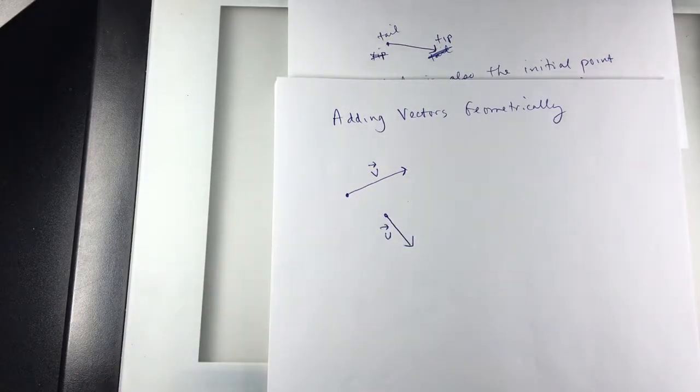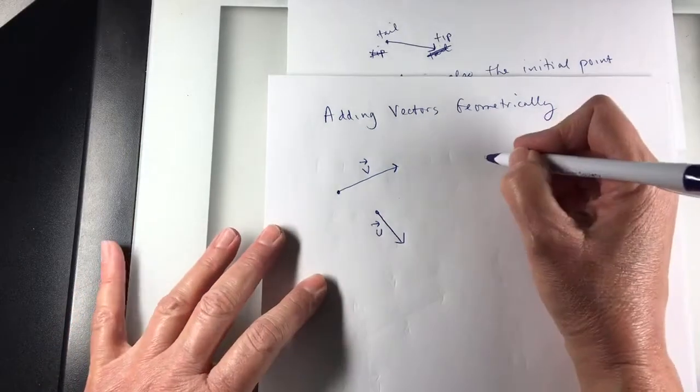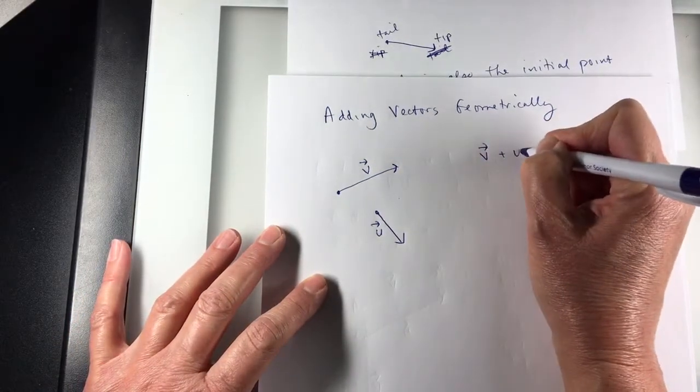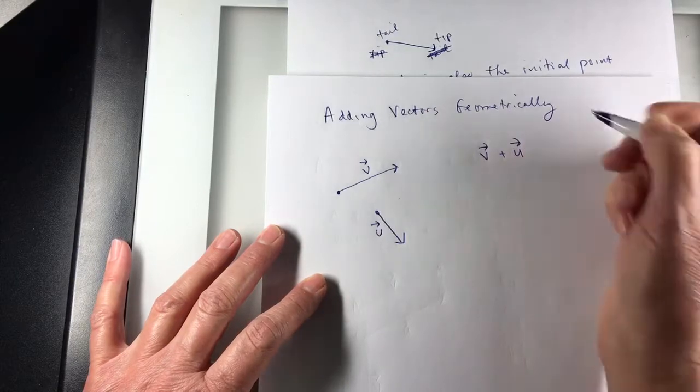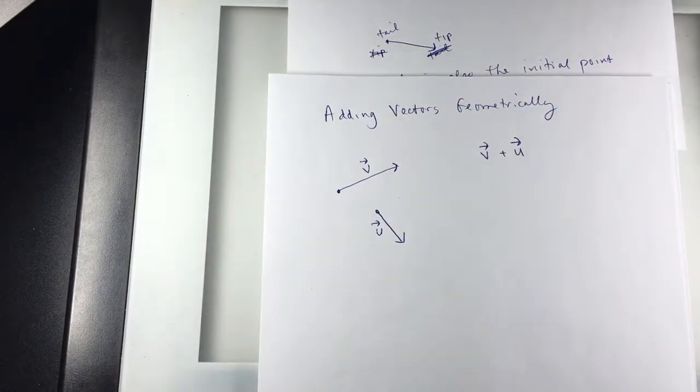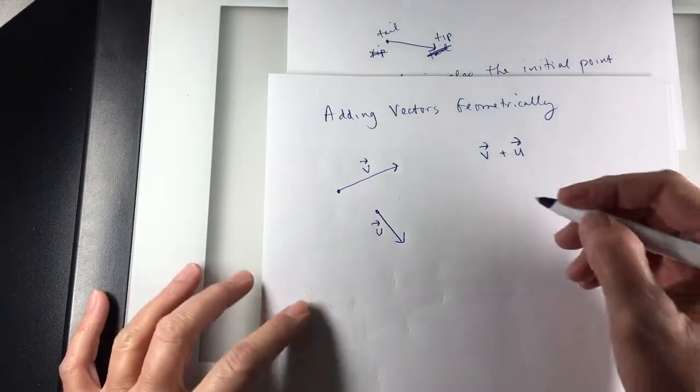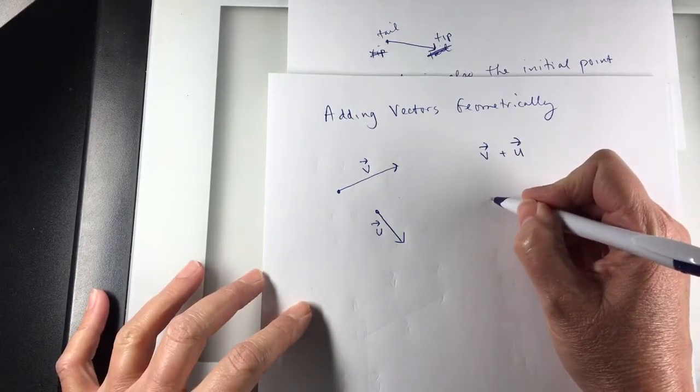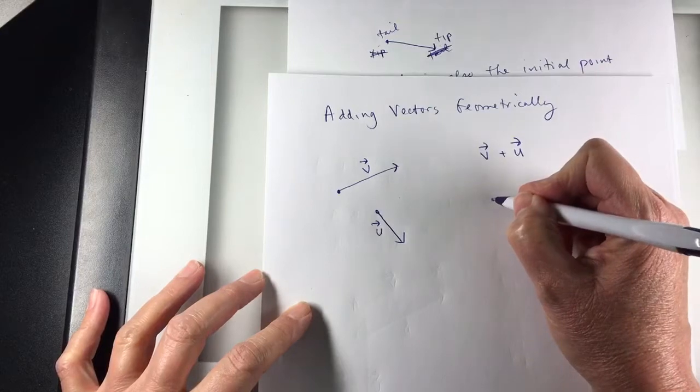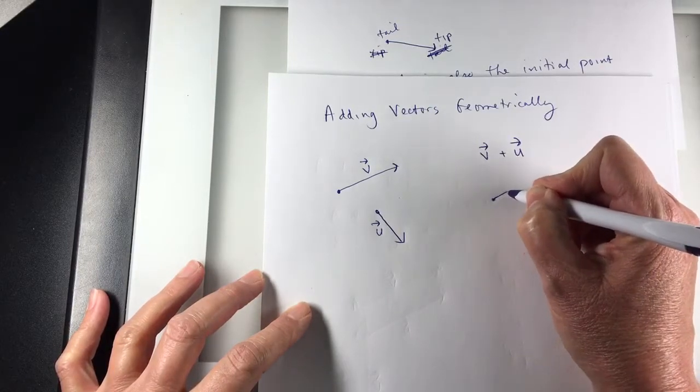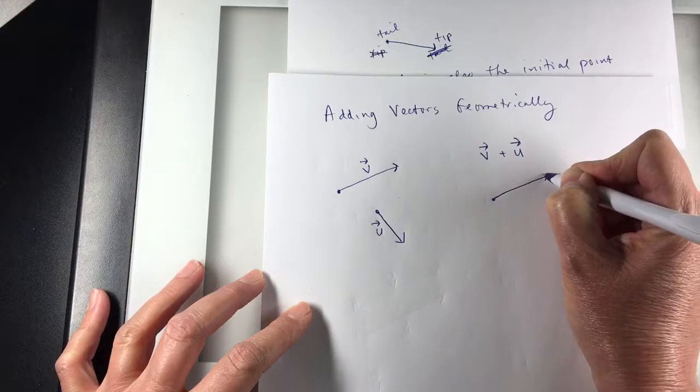And if I want to add vector V plus vector U, what I would do is I can take V. I'm going to redraw V. You can pretend this is perfect, perfectly equal to V.